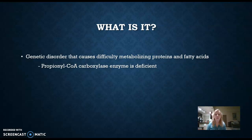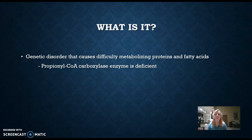It's abbreviated PA. PA is a genetic condition or disorder that causes difficulty metabolizing proteins and fatty acids that are taken in through the diet — just a normal diet. The reason why a person might have difficulty metabolizing these things is because they have a deficiency in the propionyl-CoA carboxylase enzyme, which is produced by the mitochondria. This enzyme can either be deficient due to the amount that is produced, or it can be mutated and non-effective.